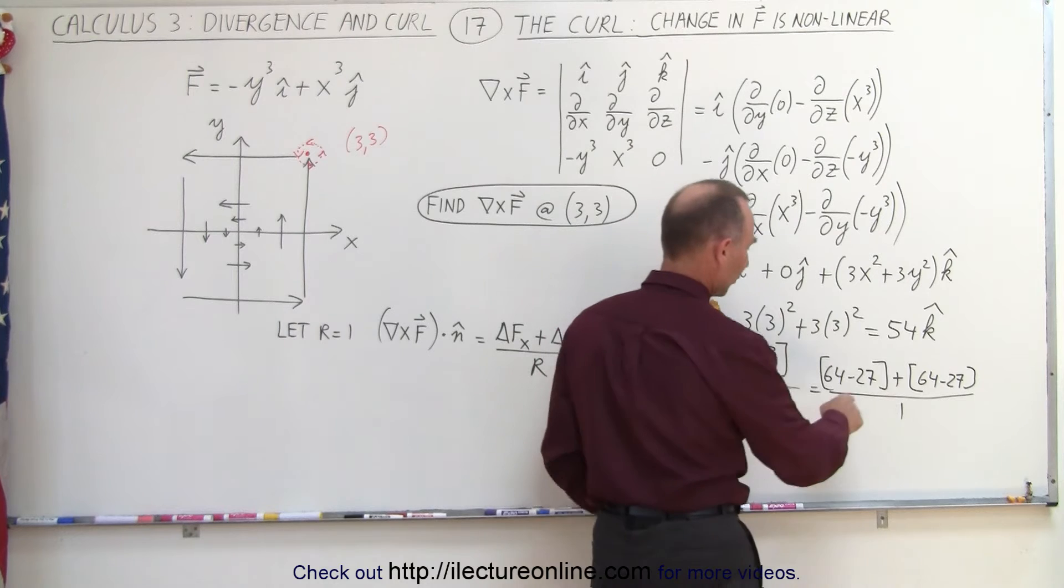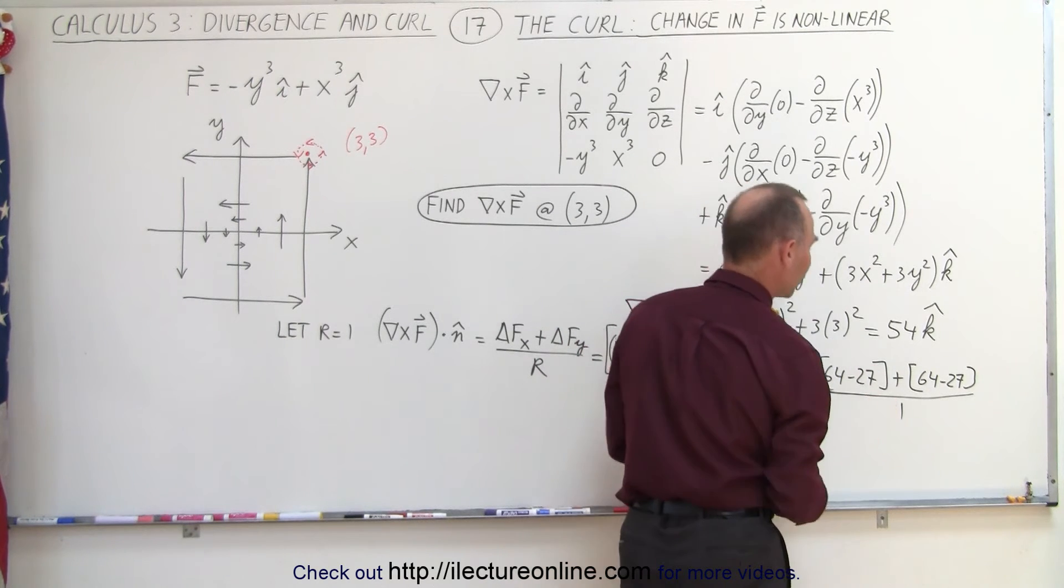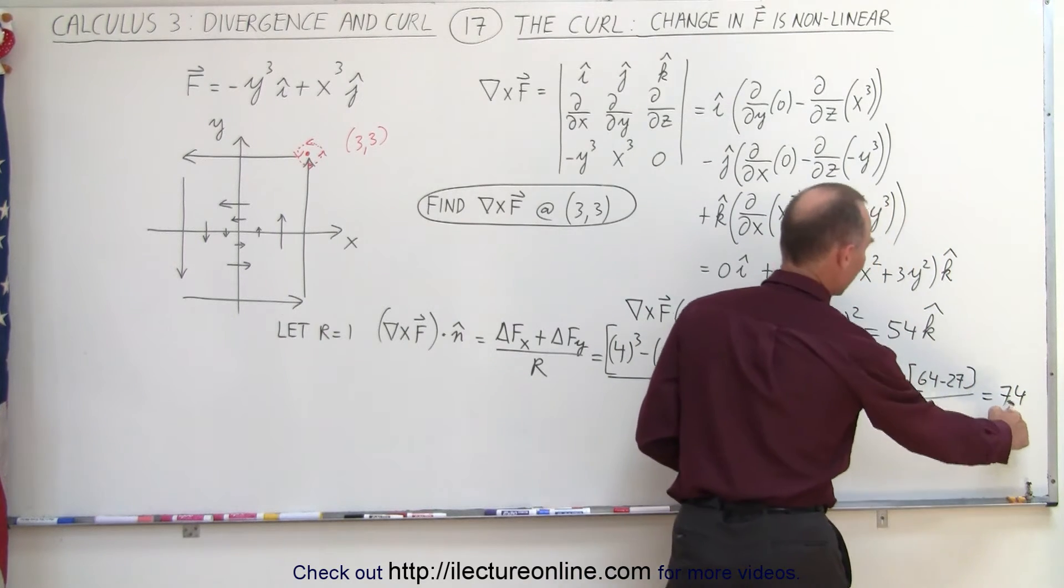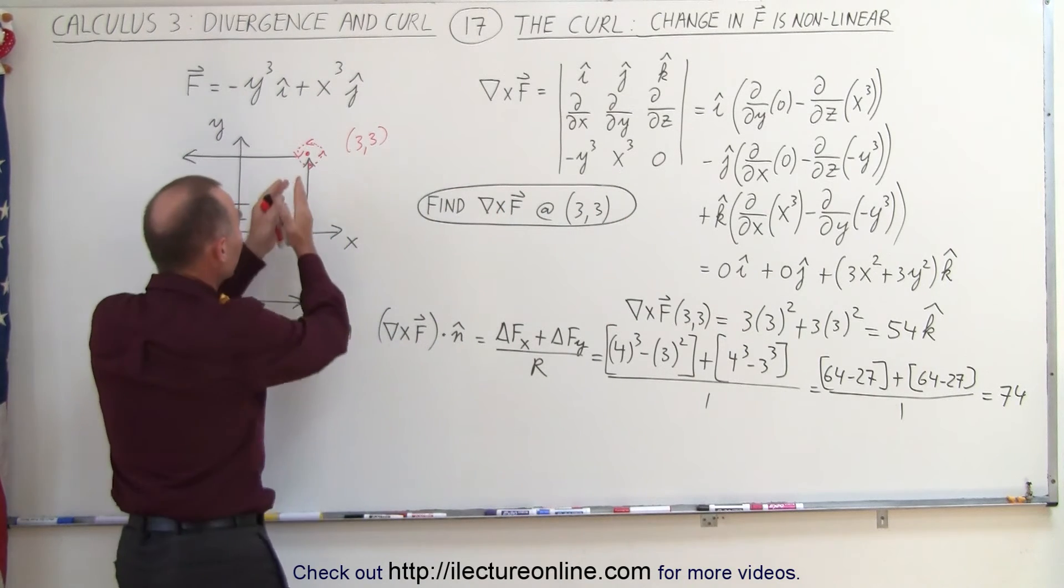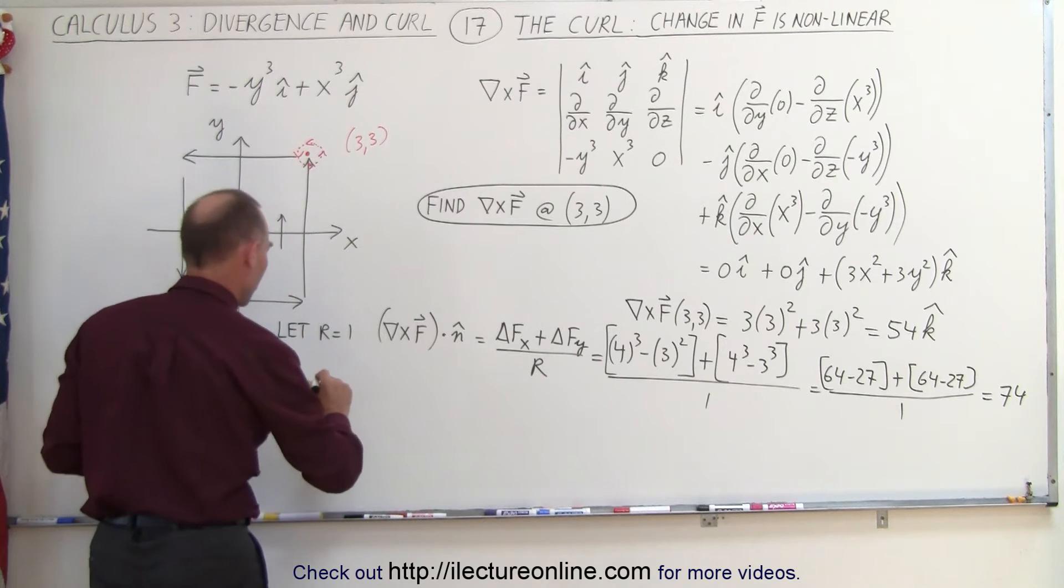And let's see here, 64 minus 27, that would be 34, that's 37, times 2, that's 74. And you can see that 74 isn't anywhere close to 54, and the reason why I'm off by that much is because I took a big step. So what I'm going to do now is I'm going to let r be smaller value.